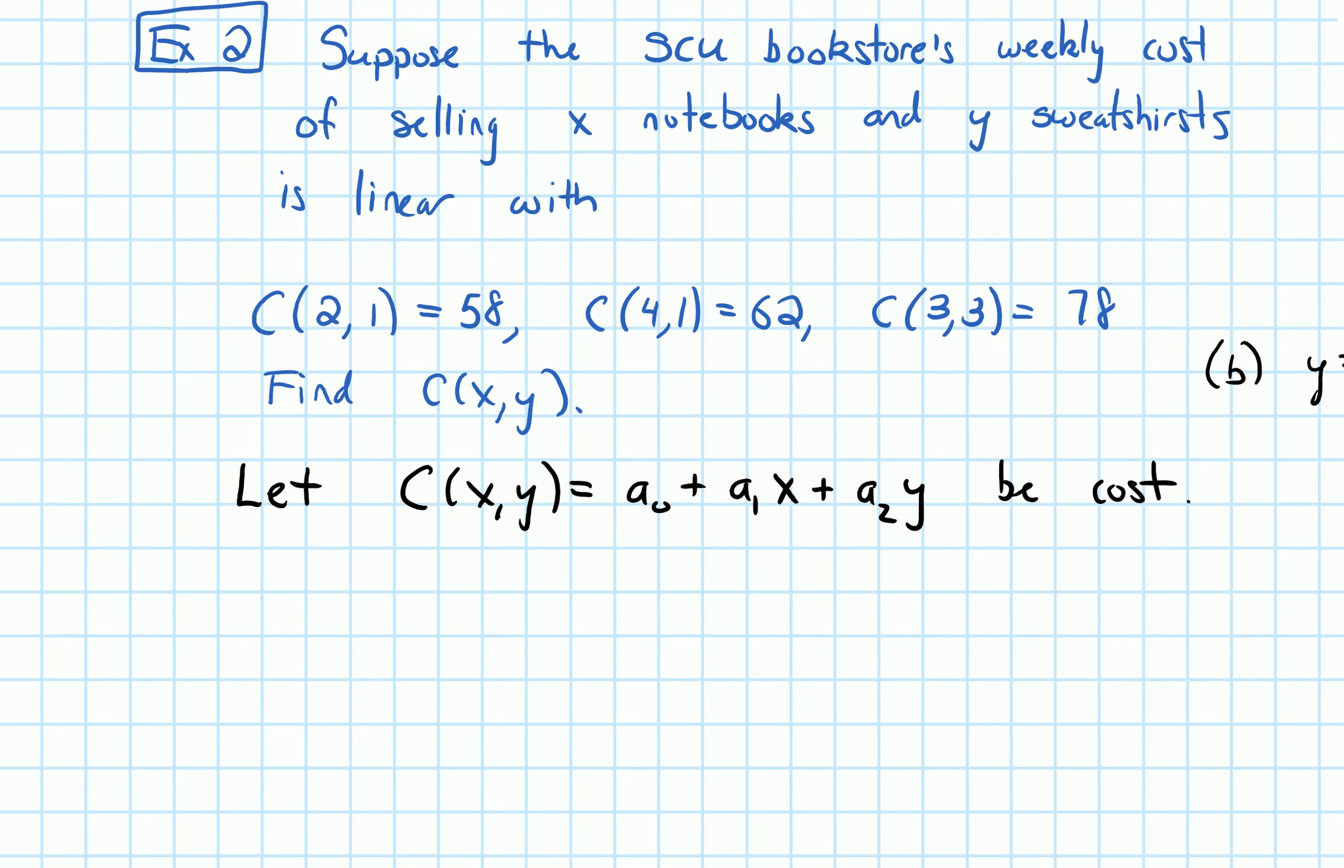And now I can plug in my data points. And if I do that, if I plug in this first point, this is saying x is two, y is one. And when I plug those in, my cost is 58. Okay, so I'm going to get a₀ plus a₁. And then what I plug in for x, x is two. So in fact, let's just write that as two a₁, two a₁. And then we're plugging in one for the y. So that'll give us plus a₂. And that needs to be equal to 58 because 58 is the cost when x is two and y is one. Okay, so I'm going to label this equation. I'm going to call it equation one.